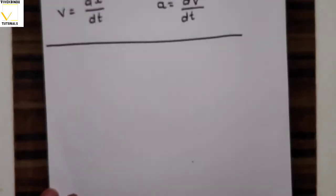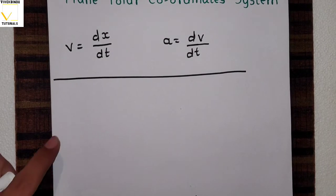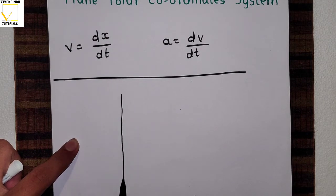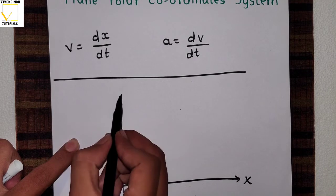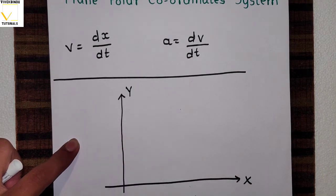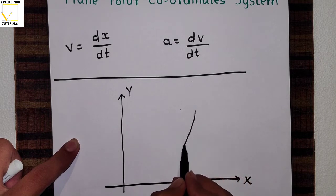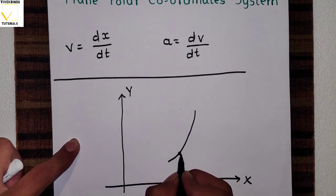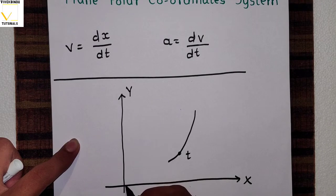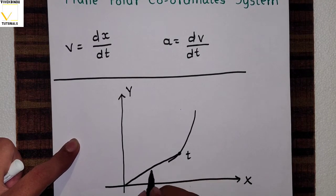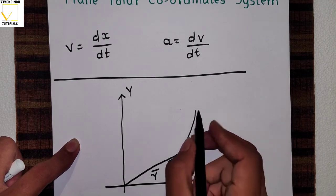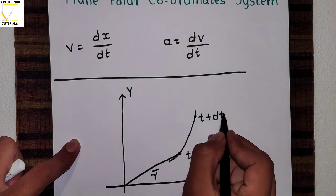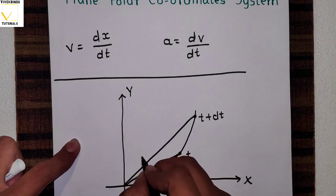Now we will introduce another coordinate system which is the plane polar coordinate system. For that, let's first consider the Cartesian coordinate system with x and y axis. Let's consider a particle moving along a trajectory. At time t the particle is at a point with position vector r bar, and after some time t plus dt the particle will be at this point and its position vector will be r bar plus dr bar.